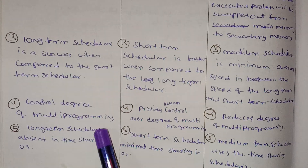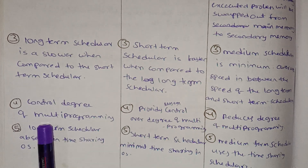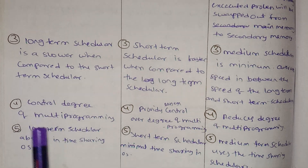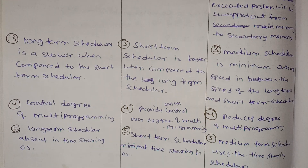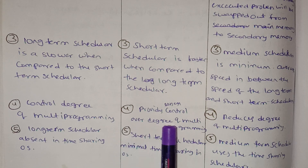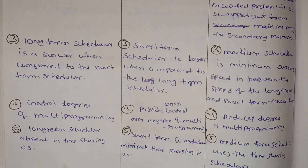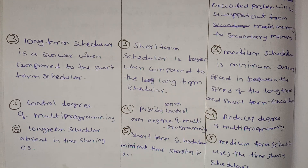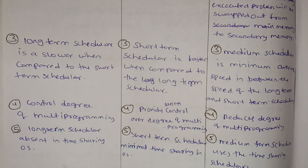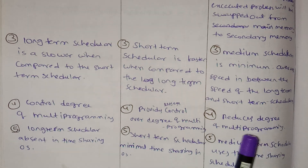Long Term Scheduler controls the degree of multiprogramming. Short Term Scheduler has lesser control over the degree of multiprogramming. Medium Term Scheduler can reduce the degree of multiprogramming by swapping out processes.